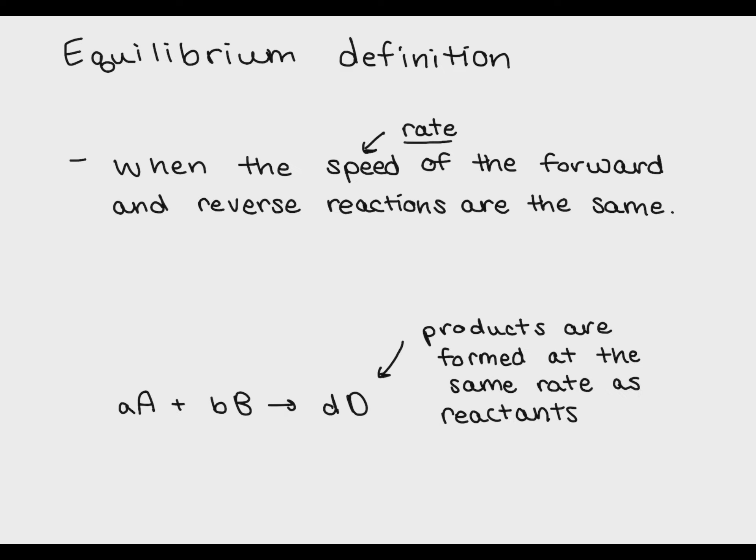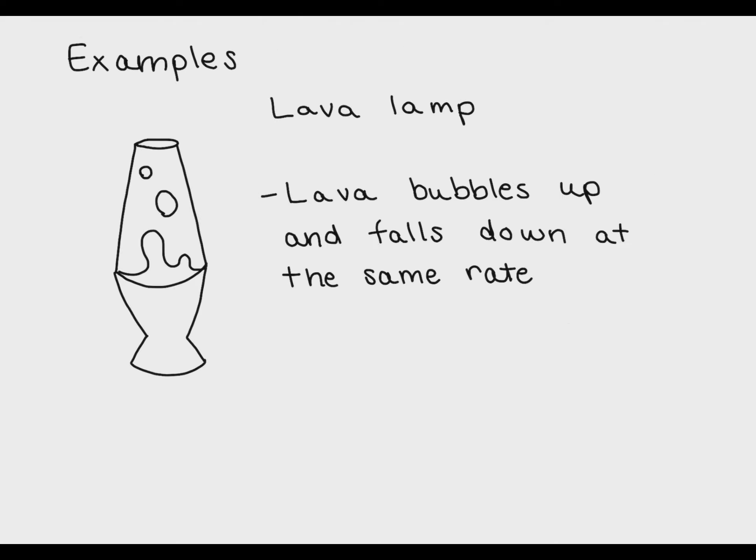Equilibrium can really be thought of as a balance between products and reactants. Equilibrium occurs when the products and the reactants are both being formed at the same rate. This means for every product or every reactant that I make, the opposite is being made at the same rate with respect to stoichiometric ratios.